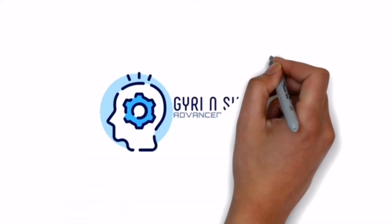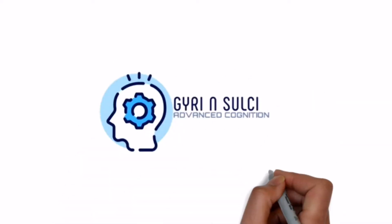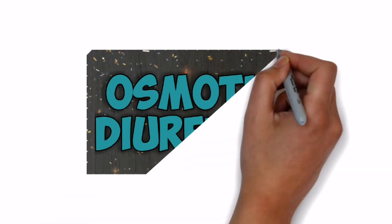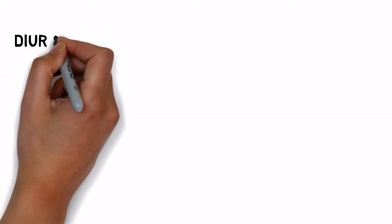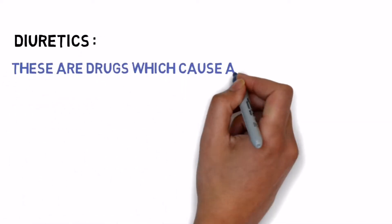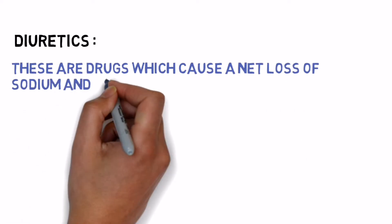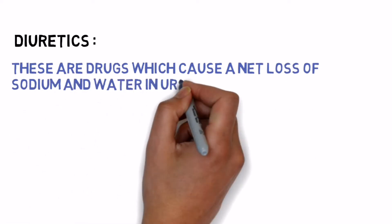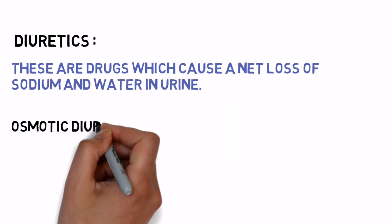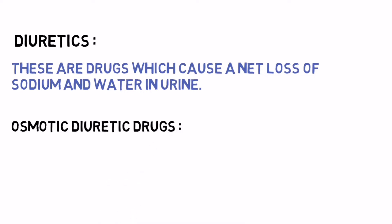Hello friends, welcome to the channel Gairi and Sulky. Today our topic of discussion is osmotic diuretics. Definition of diuretics: these are the drugs which cause a net loss of sodium and water in the urine. Let us see some examples of osmotic diuretics.